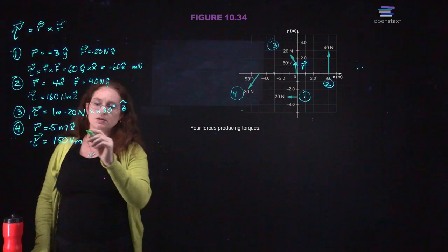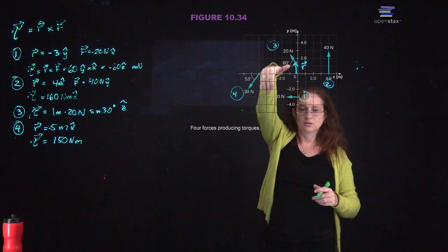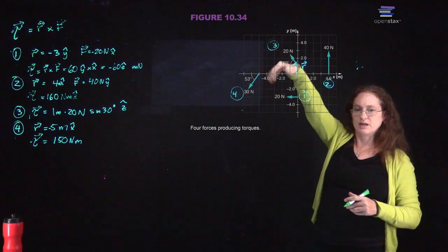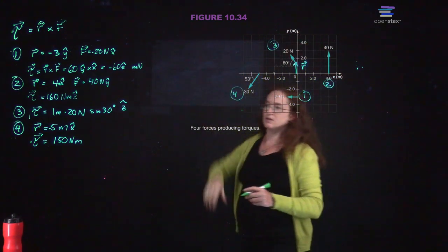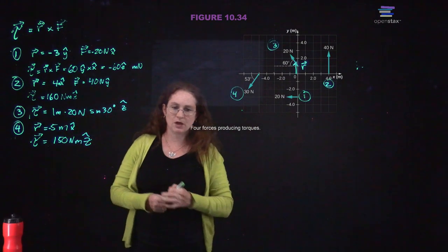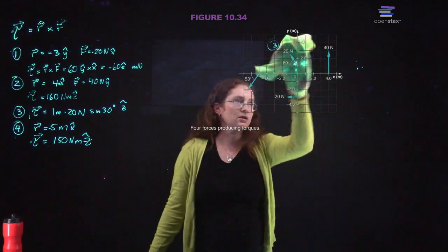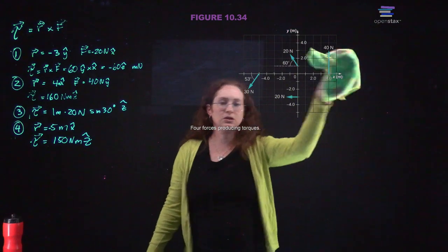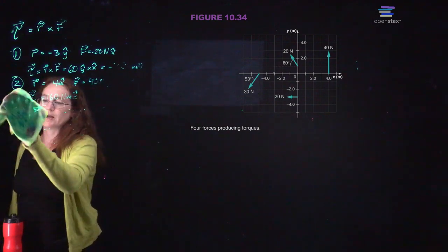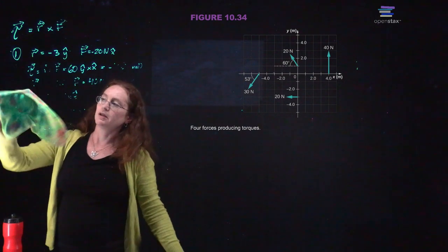Number four: r equals 5 meters in the negative x̂ direction and force is 30 N. Torque equals 150 N·m, and this is a positive ẑ hat. So that's how you do it — practice along with the video, make sure you are getting good practice with the right-hand rule.